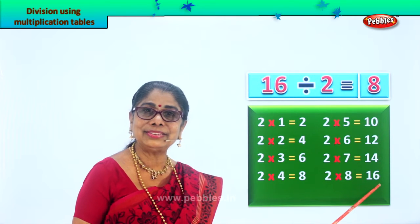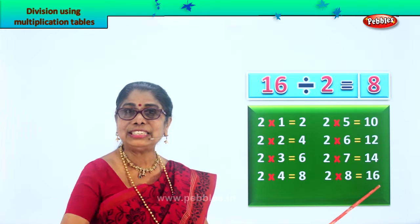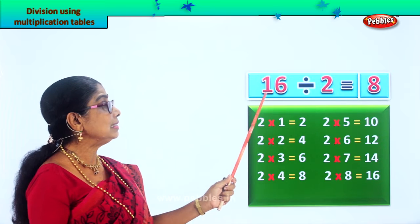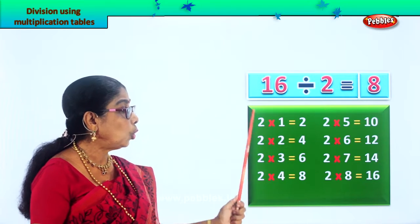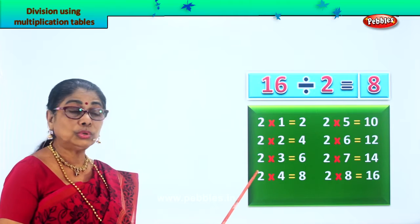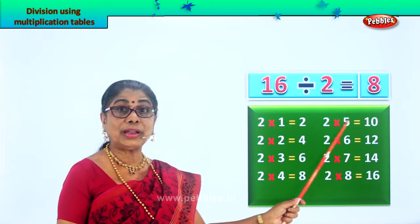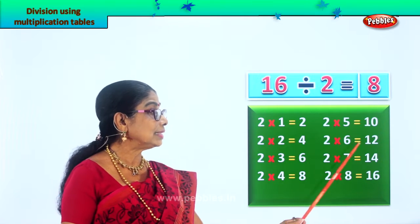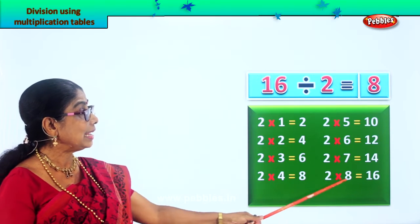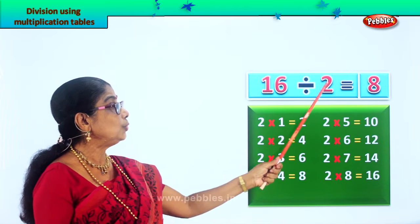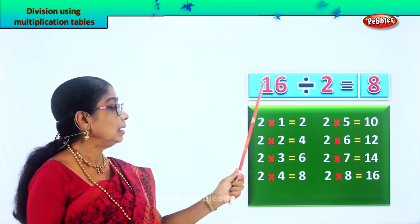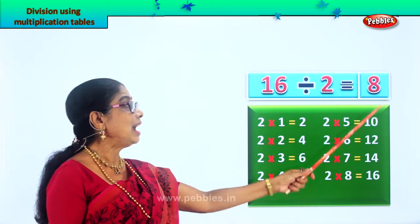Division is reverse multiplication. To find 16 divided by 2, go through the 2 times table: 2 ones are 2, 2 twos are 4, 2 threes are 6, 2 fours are 8, 2 fives are 10, 2 sixes are 12, 2 sevens are 14, 2 eights are 16 — and your answer is 8. Reverse: 8 twos are 16.